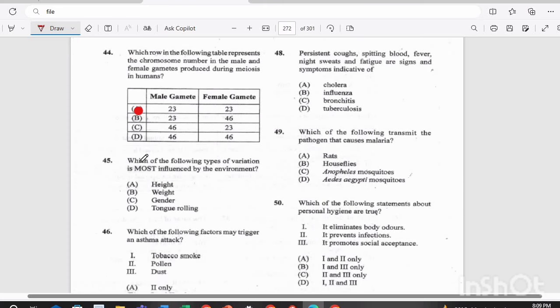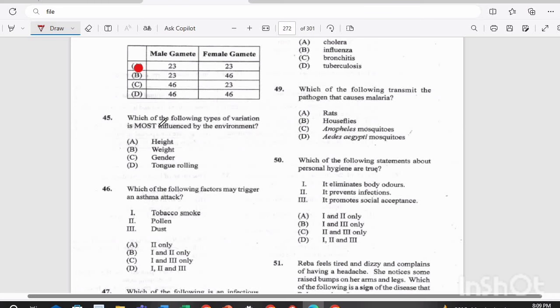Question 45. Which of the following types of variation is most influenced by the environment? Is it A, height, B, weight, C, gender, or D, tongue rolling? The answer there would be weight.